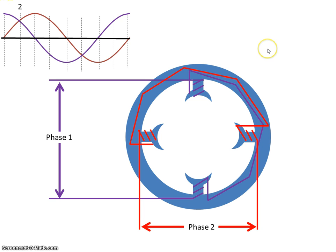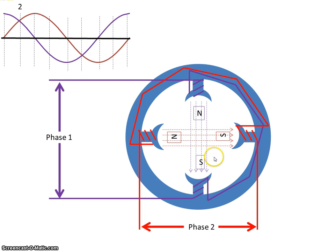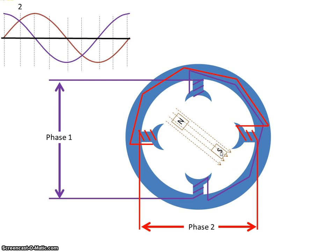Now at time two, phase one is still in the positive half cycle and phase two is also now in a positive half cycle. So there is current flowing through these windings, giving me a magnetic field in that direction, and current flowing in these windings giving me a magnetic field in that direction. But flux lines can't cross, so we have to find an intermediary position. This side is both north, this side is both south, so the intermediary position will be somewhere around here — there. So that's where the magnetic field is at point two.